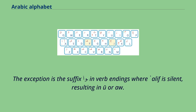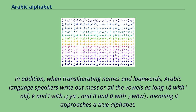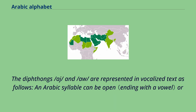The exception is the suffix waw in verb endings where alif is silent, resulting in 'u' or 'aw'. In addition, when transliterating names and loanwords, Arabic language speakers write out most or all the vowels as long, meaning it approaches a true alphabet.